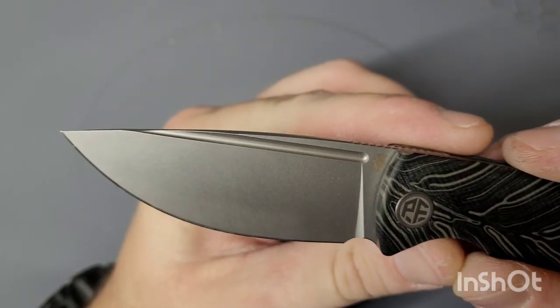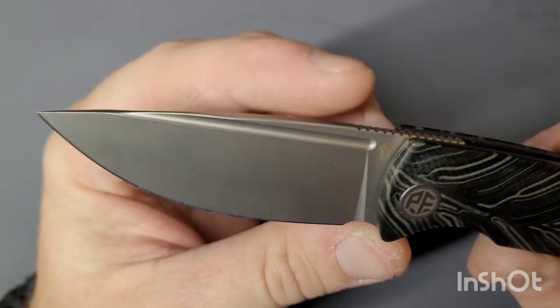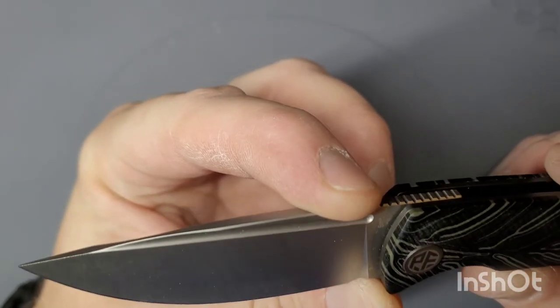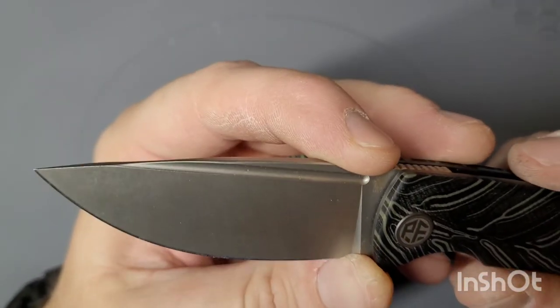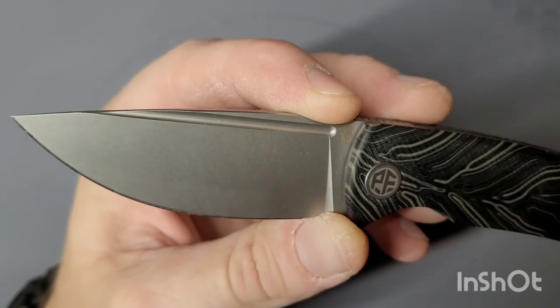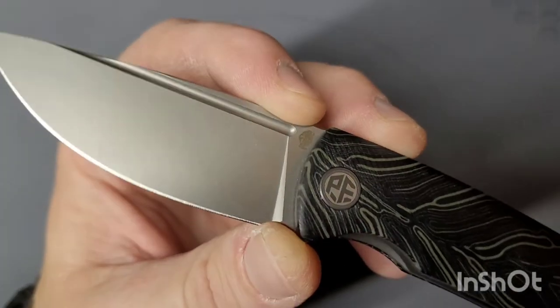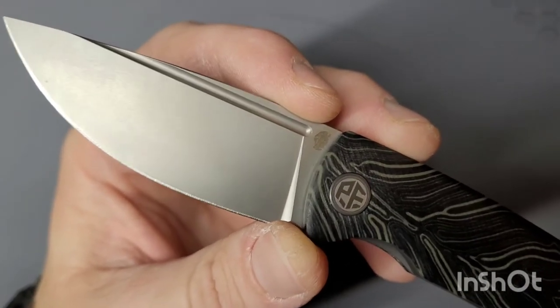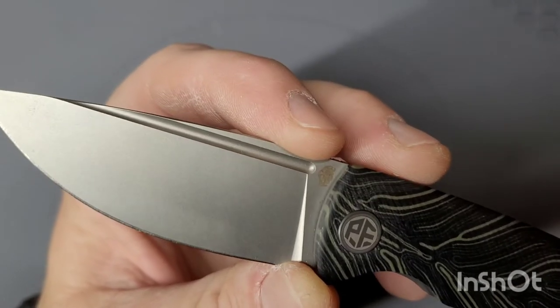With a width of 1.06 inches. It's a flat ground drop point blade. Weighs 3.37 ounces.